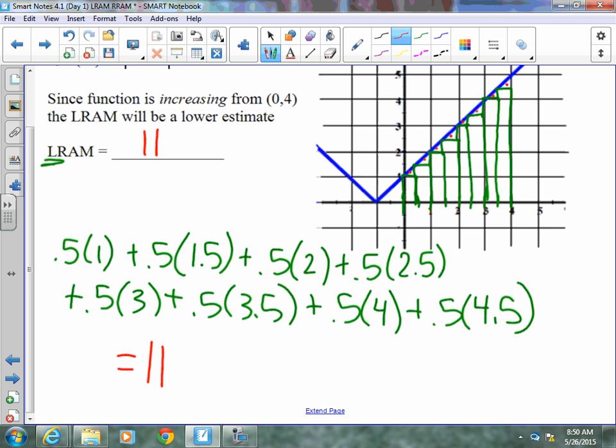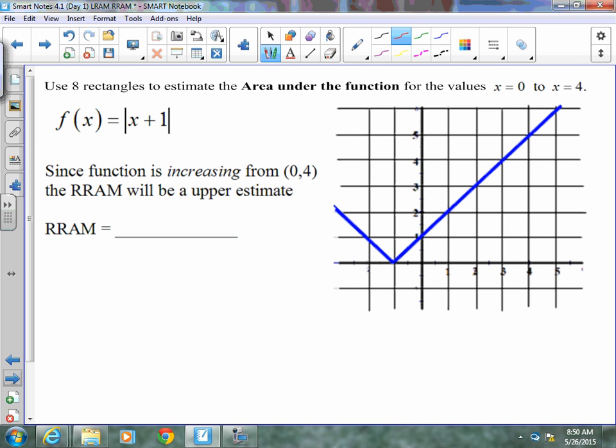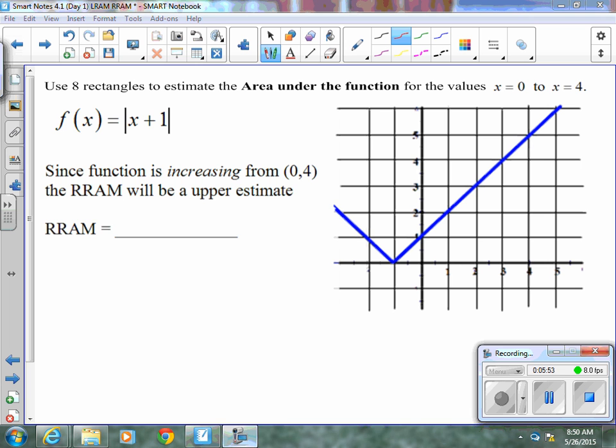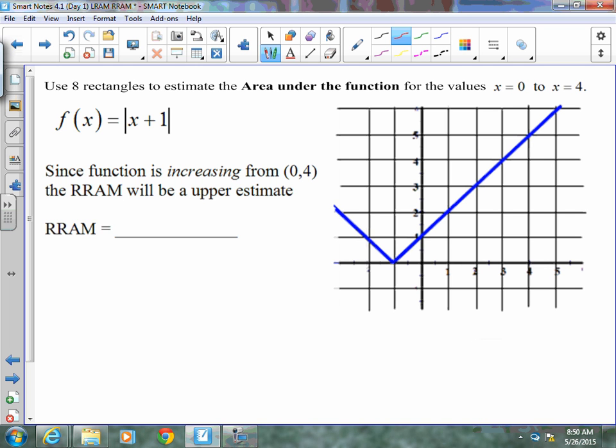You could label that unit squared. Typically, the AP test doesn't care if you use a label unless they give you units, and then they want a label. So go ahead and try this next one on your own. Pause the video for a few minutes. Give it a try. Now that you've tried this one, you should get 13. If you have questions on that, we can talk about it tomorrow.